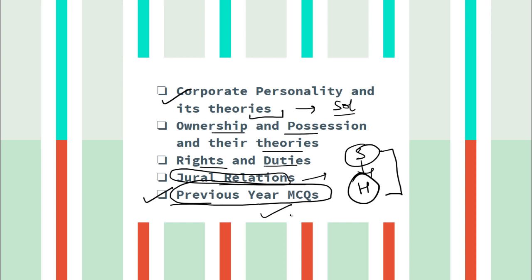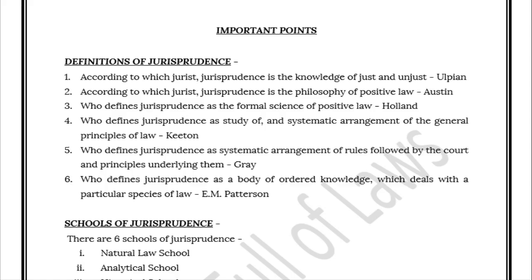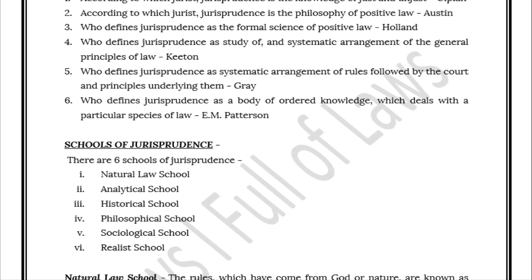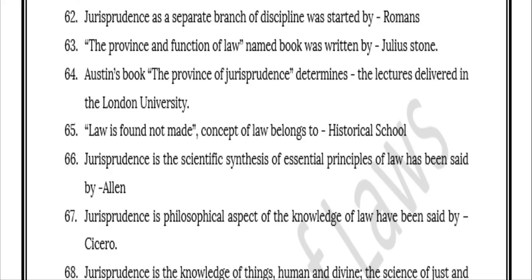I hope you will definitely benefit. If you want access, you will get the link below in the description box. Now I will show you some important pages to acquaint you with this capsule. This is the jurisprudence capsule — I have covered important points, first the definitions of jurisprudence including Austin, Holland, and other jurists with key points. Then the schools of jurisprudence — there are 6 types of schools explained in detail, covering the important jurists and their key aspects about law.